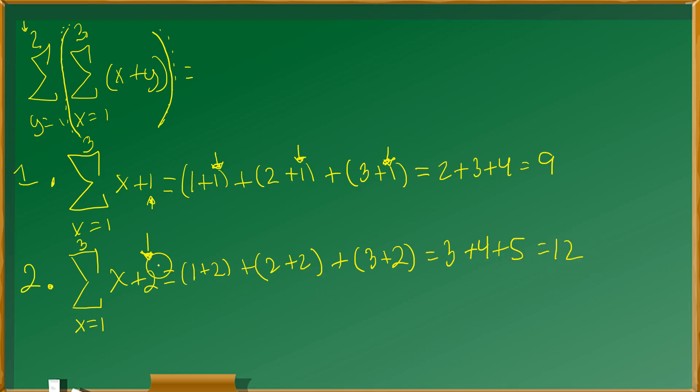And lastly, the total sum will simply be the result of adding up all of these values. So that would be right here. Just add these straight down. So 9 and 12 here will give you 21. And that would be the value of the double sum.